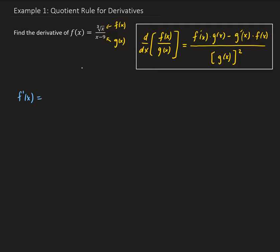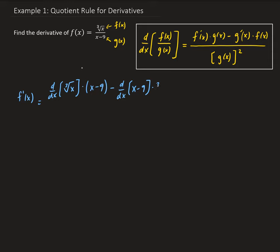So f prime of x is going to be: we're going to take the derivative of f of x, which is cube root of x, times the denominator, minus g of x — which is the derivative of g of x — times f of x. And all this is going to be divided by the denominator squared.